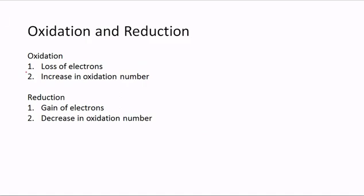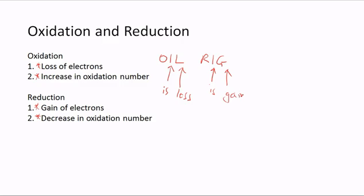Another topic closely associated with electrolysis is oxidation and reduction. Oxidation is the loss of electrons and also the increase in oxidation number. Reduction is the gain of electrons or a decrease in oxidation number. You may have come across the acronym OIL RIG — Oxidation Is Loss, Reduction Is Gain of electrons.